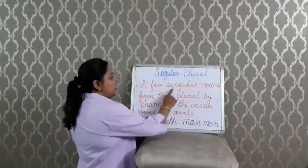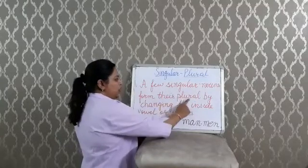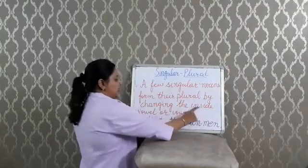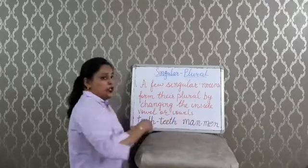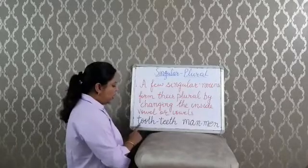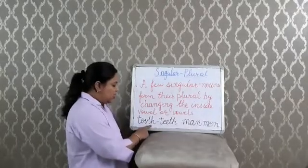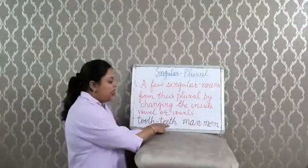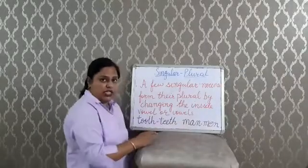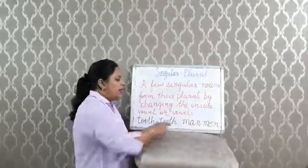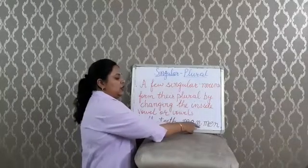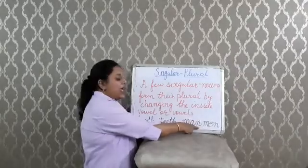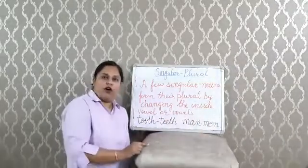A few singular nouns form their plural by changing the inside vowel or vowels. For example, the word tooth changes the double 'o' into double 'e' to become teeth. For man, we change the vowel 'a' into 'e', so man becomes men. I hope children, you have now understood singular and plural nouns well.